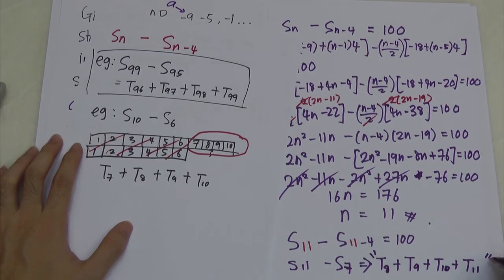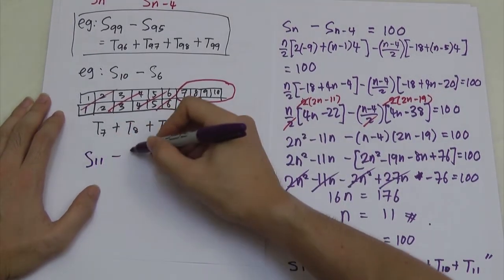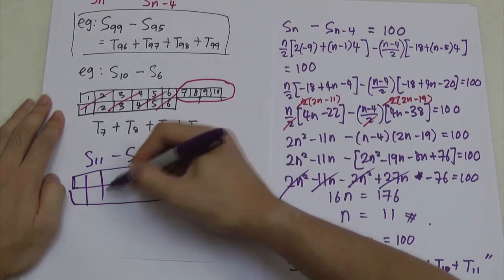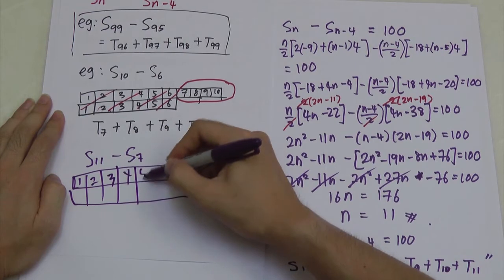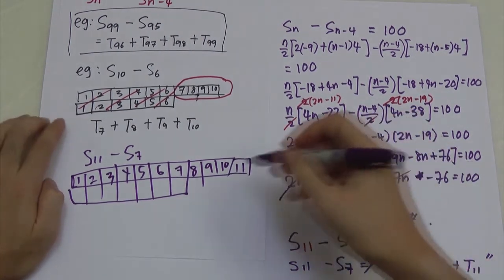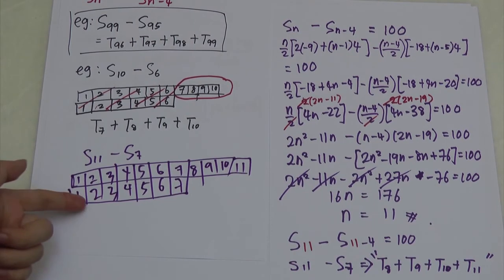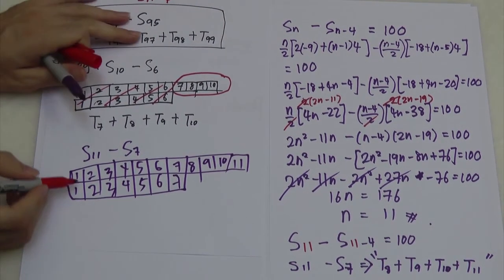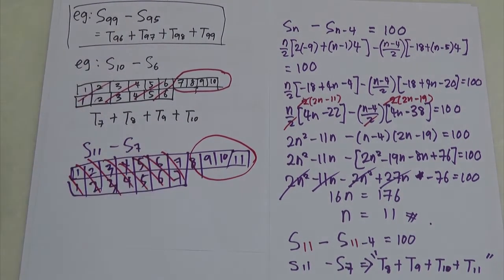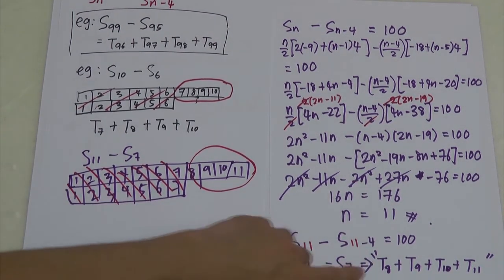Let me draw a diagram. S11 covers terms 1 through 11. S7 covers terms 1 through 7. You subtract S7 from S11, cancelling the first 7 terms, and what you're left with is terms 8, 9, 10, and 11. So the sum of these 4 consecutive terms equals 100.